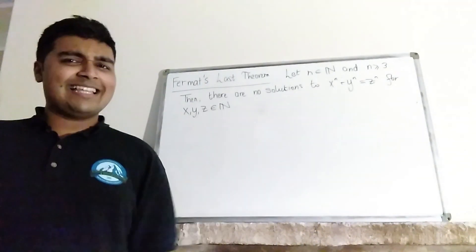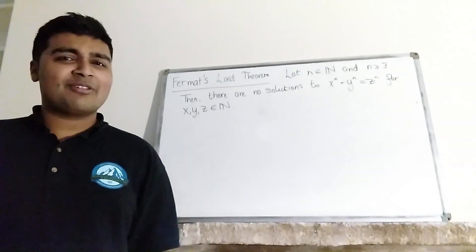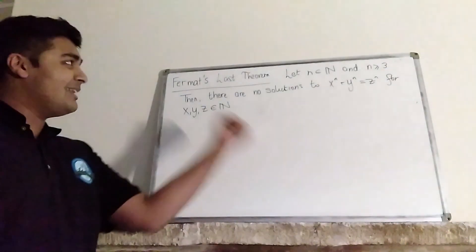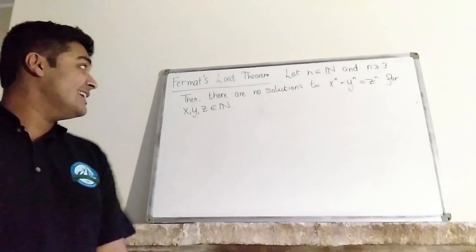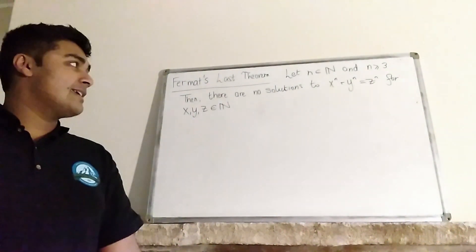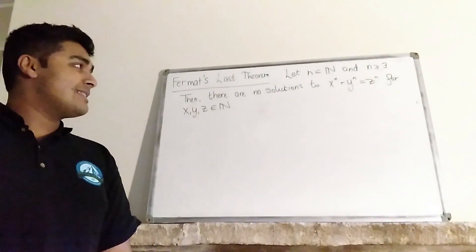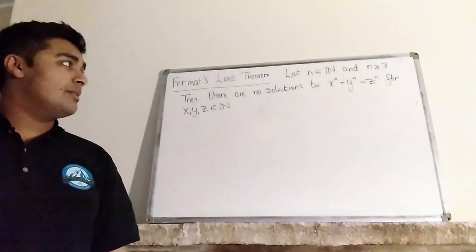Let me firstly state Fermat's last theorem and then I'll get into the proof. So let n be a natural number bigger than or equal to 3. Then there are no solutions to x^n + y^n = z^n for x, y, z natural numbers.